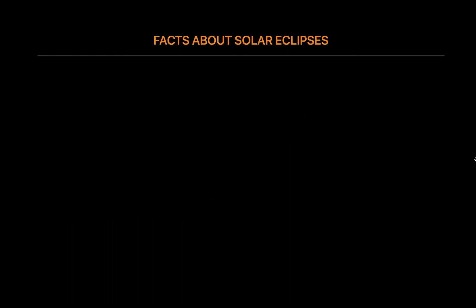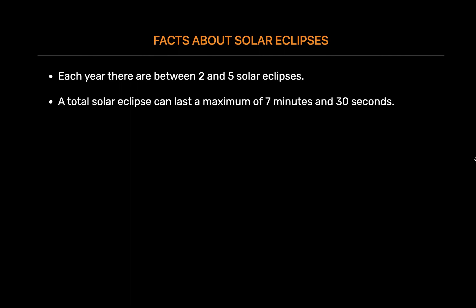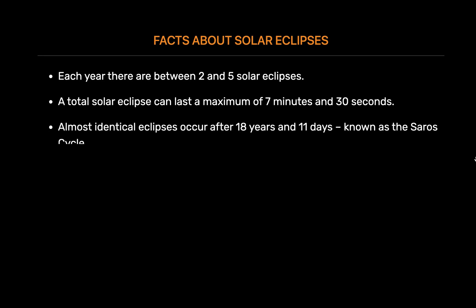Facts about solar eclipses. Depending on the geometry of the Sun, Moon, and Earth, there can be between two and five solar eclipses each year. A total solar eclipse can last a maximum of 7 minutes and 30 seconds. Almost identical eclipses occur after 18 years and 11 days. This period of 223 synodic months is called a Saros.